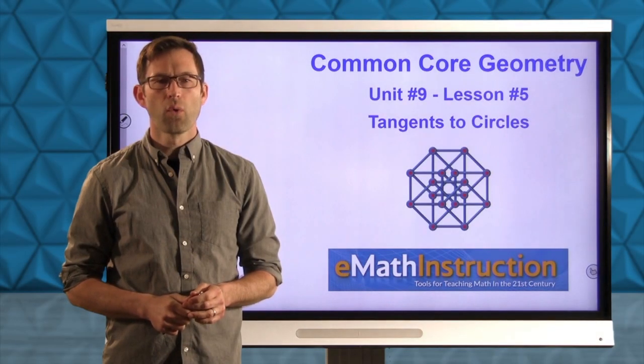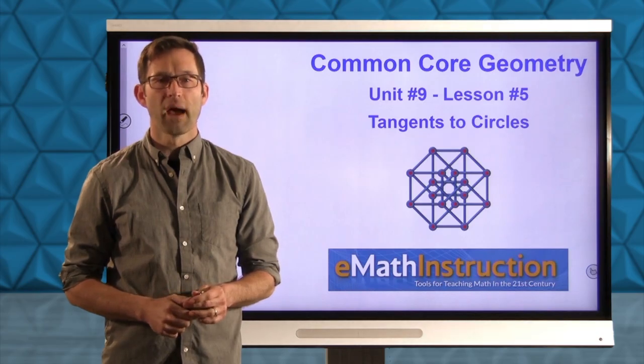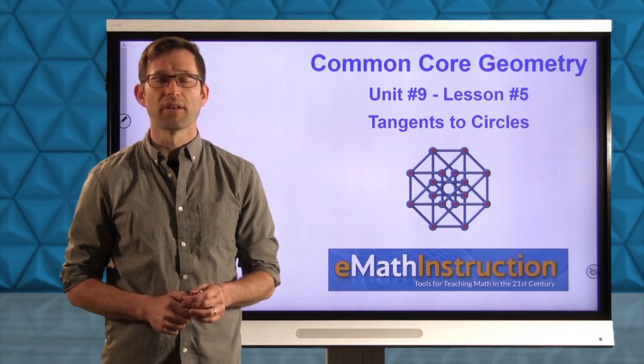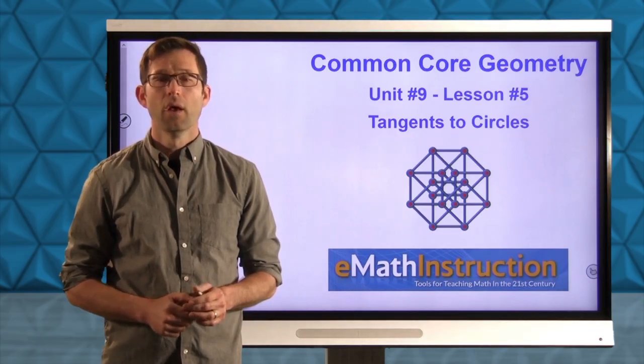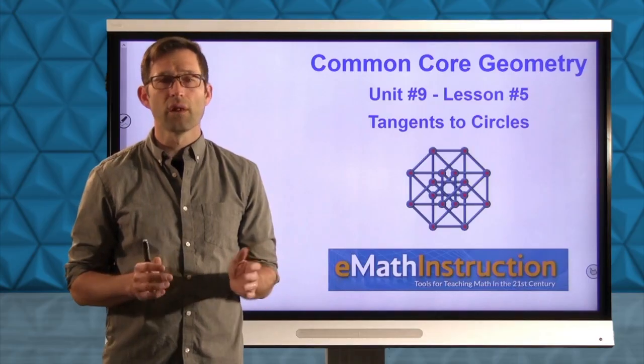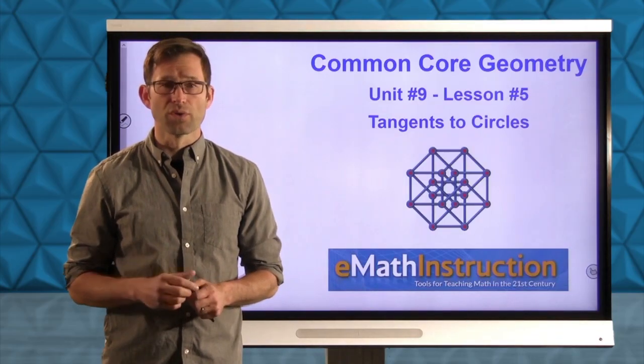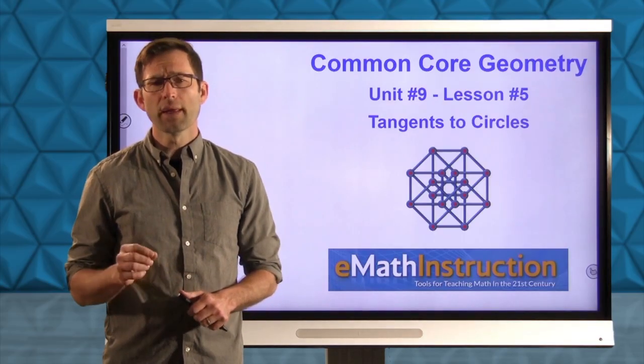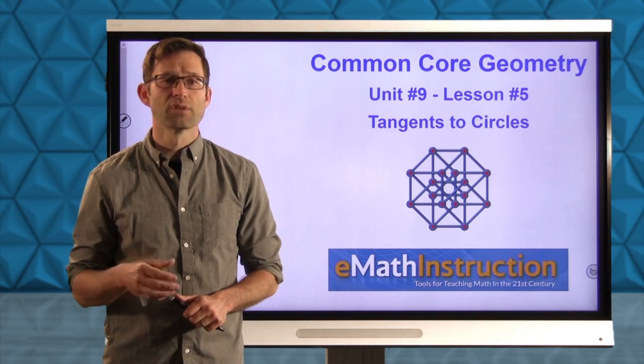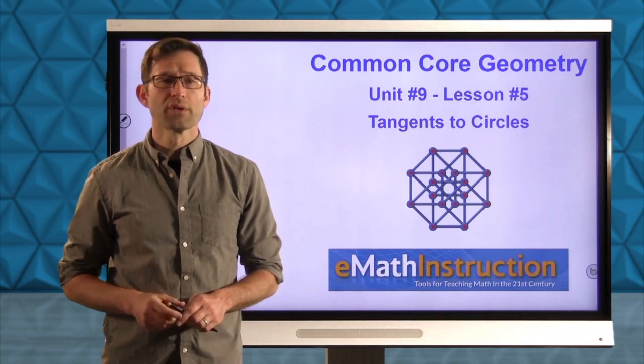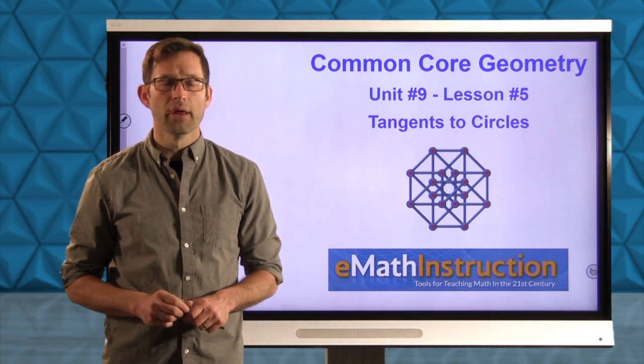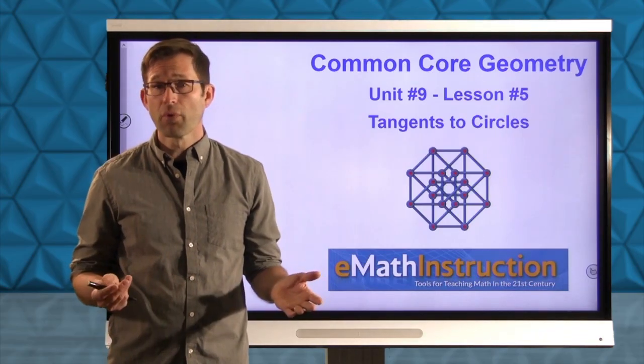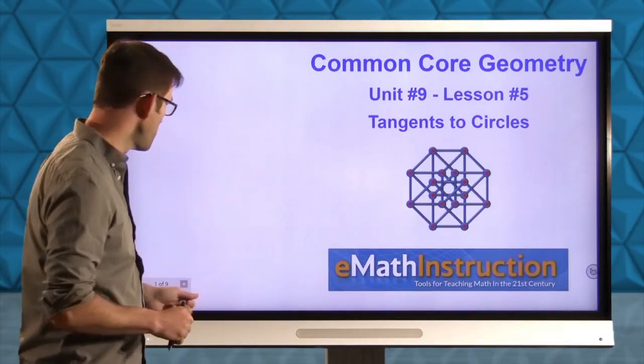Hello and welcome to another Common Core Geometry video by eMath Instruction. My name is Kirk Weiler and today we'll be doing unit number nine lesson number five on tangents to circles. So far we've seen a lot of different line segments or lines that relate to circles such as chords, radii, and diameters and we've seen relationships that they have in terms of their angles and in terms of their lengths. Today what we're going to start doing is looking at a very important idea which is what's known as a tangent to a circle. So let's jump right into it and introduce what that geometric object is.